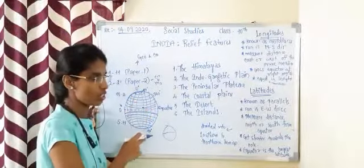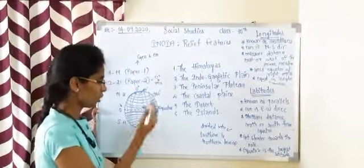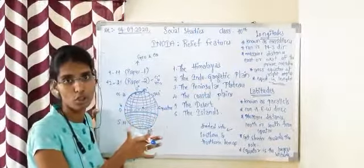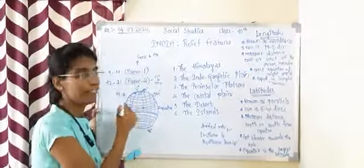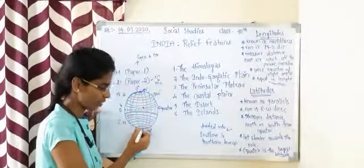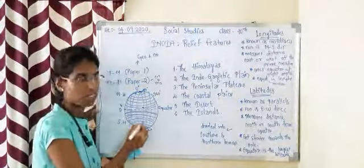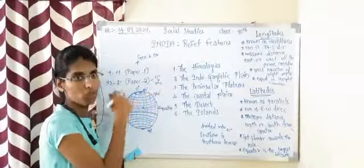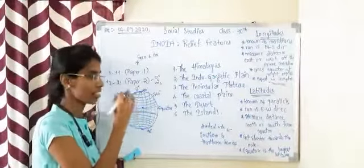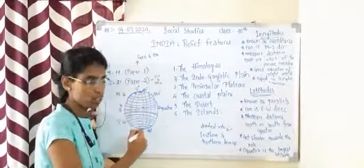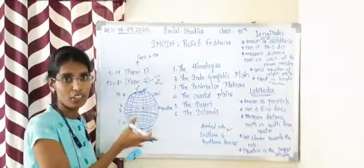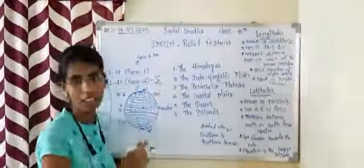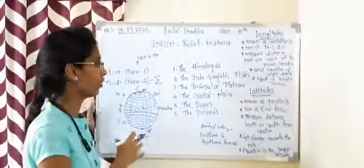The northern hemisphere is above the equator and the southern hemisphere is below it. The equator is the longest and biggest latitude on the globe. Whenever the lines go towards the poles, the size of the latitude decreases — both towards the north side and towards the south side, the length of the latitude decreases. The equator is the biggest latitude.